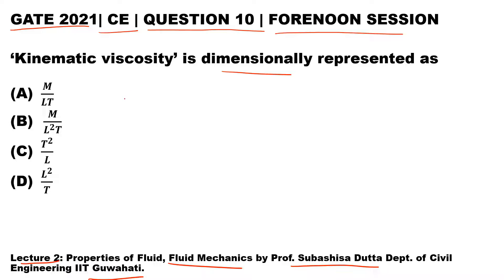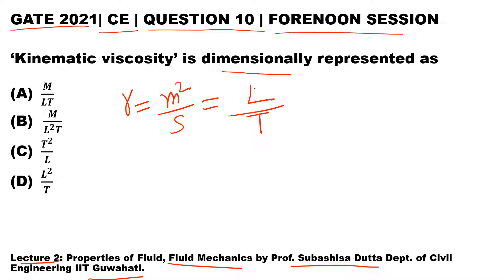As we know, kinematic viscosity ν has dimensions of meter square per second. Dimensionally, taking meter as L and second as T, this is represented as L squared by T, i.e., L²T⁻¹. So the answer is option B. So here option D is correct. Thank you.